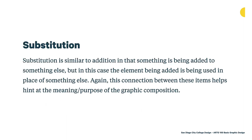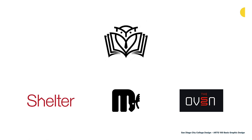Another concept is substitution — similar to addition in that something is being added, but in this case the element being added is used in the place of something else. This connection helps hint at the meaning of the graphic composition. In the owl-and-books logo, the wings of the owl have actually been removed and substituted with a book — and even some of the body at the bottom has been taken away to create book pages. This substitution gives us more meaning and lets us know this is an owl logo that relates to books.